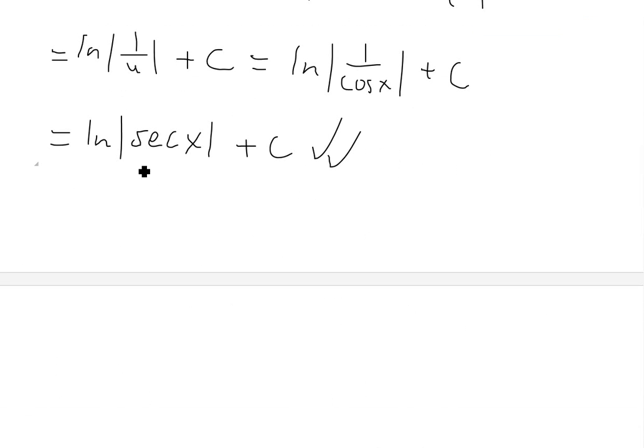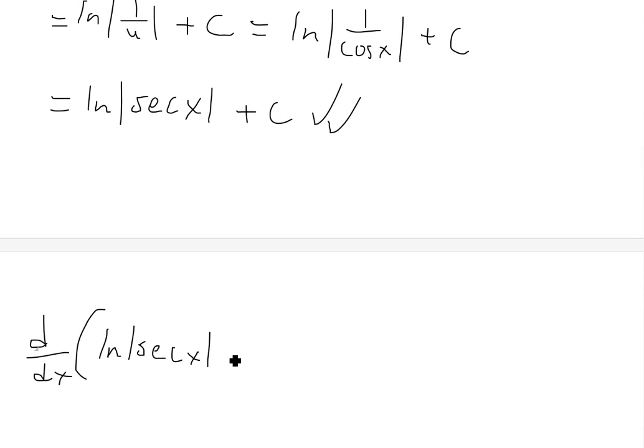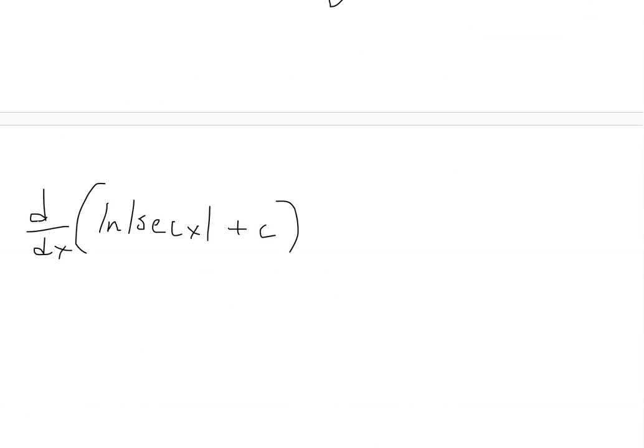And also like always you can double check this by taking the derivative. So we're going to take the derivative d/dx of ln secant x plus C. So we take the derivative of this one. This ln, the derivative of that is going to be 1 divided by secant of x. And now the derivative of secant of x, like I showed in my earlier video, that's just going to be, well,